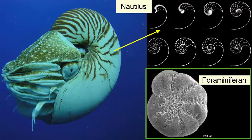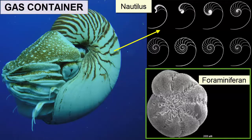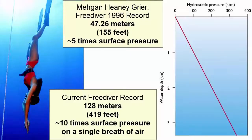Another method of buoyancy is used by animals with hard shells. These shells can contain chambers called gas containers which fill with gas to keep the animal afloat. These organisms can rise and fall quickly with no harmful effects — unless they descend too deep, where high pressures will crush the rigid gas containers, causing death. Organisms with gas containers include foraminifera and the chambered nautilus.